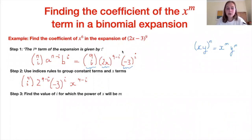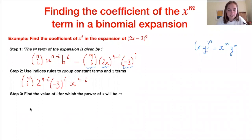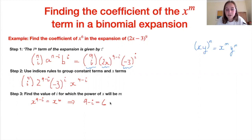The third step is to find the value of i for which the power of x equals m. We want the x⁶ term, and our x term is x^(9−i). Setting 9 − i = 6 gives i = 3. So we need the i = 3 term.